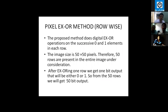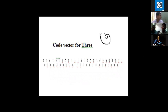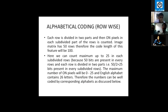The next method is pixel XOR. Since we have an image matrix containing ones and zeros, digital XOR gates can be applied. Two consecutive elements of the image matrix in a row are XOR-ed, and for every row we get either a one or zero output. Since our image size is 50 by 50 pixels, there are 50 rows and we get 50 output values. This is the feature vector for Bangla numeral 3, and we can see the output contains only zeros and ones due to the XOR operation.